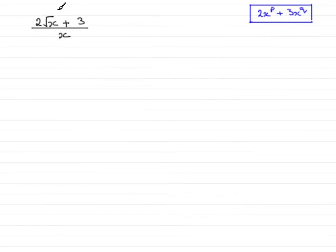Now in this part of the question we're given 2 root x plus 3 all divided by x and asked to express this in the form 2x to the power p plus 3x to the power q where p and q are constants. So how are we going to do this? Well there's several ways and I'll show you two ways anyway that I can come up with.